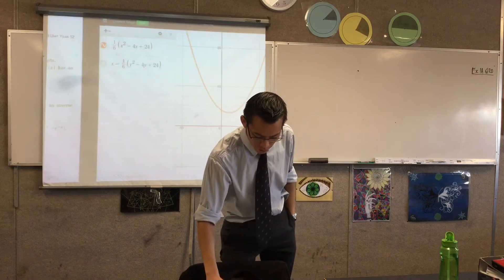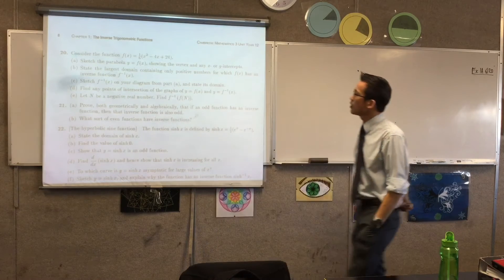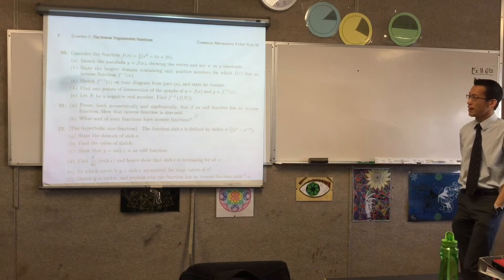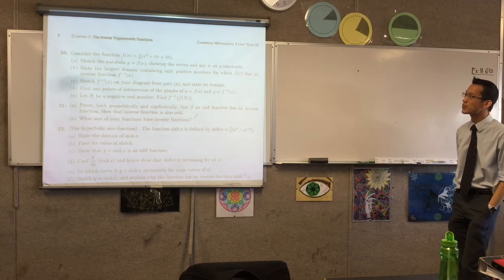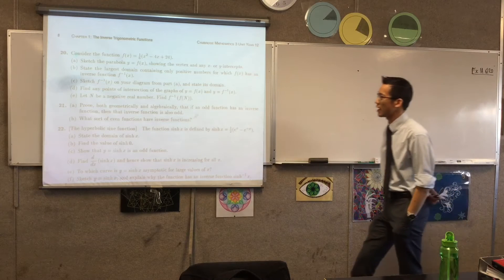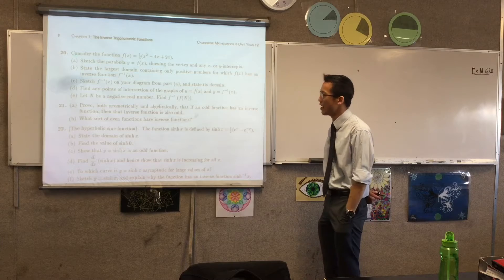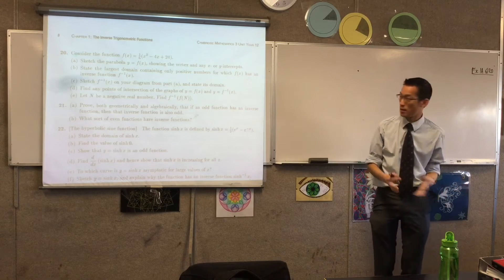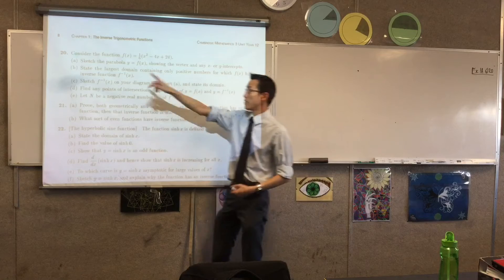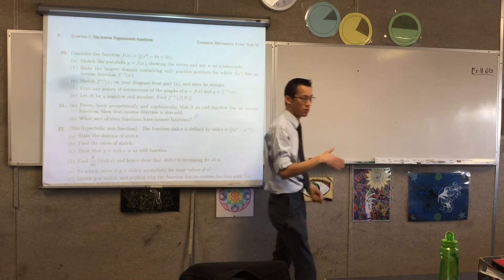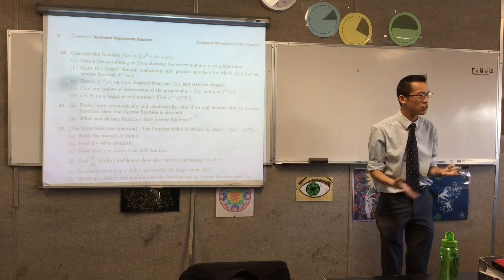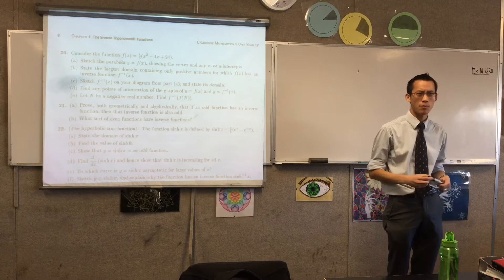Then we go back to the question, and it says, state the largest domain containing only positive numbers for which f of x has an inverse function f inverse. Okay, so pause. It's a parabola. We need to think about this domain restriction because when you go to an inverse function, what's the issue with that parabola? Why is it a problem?